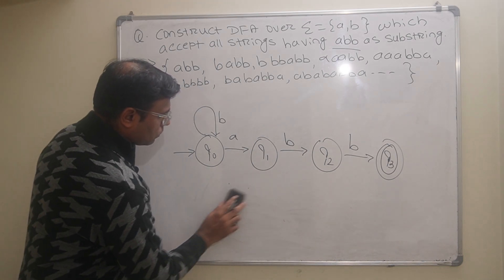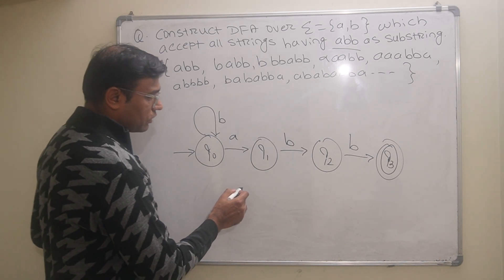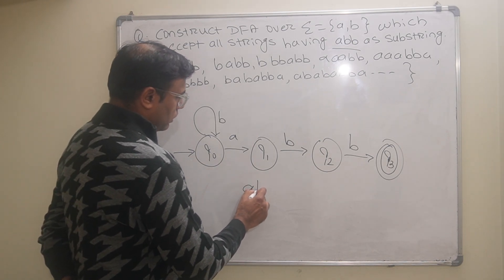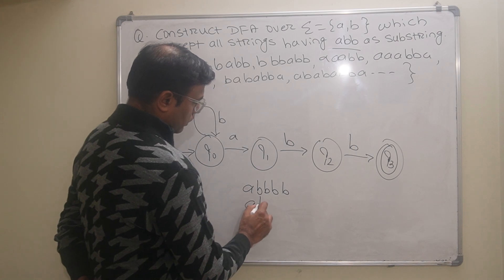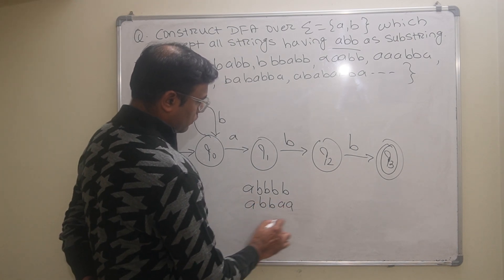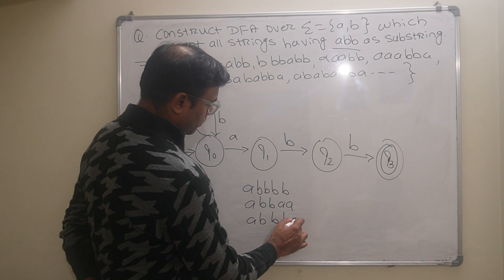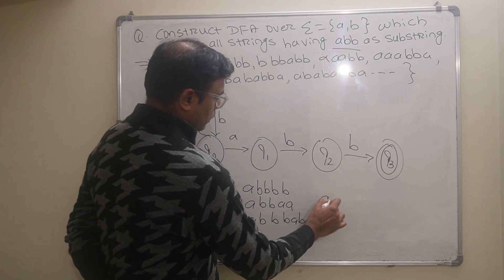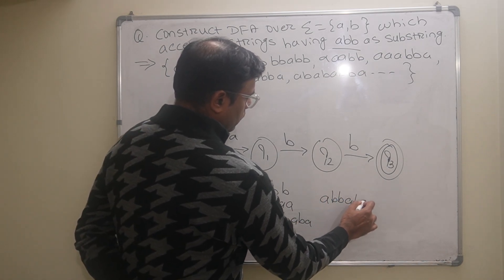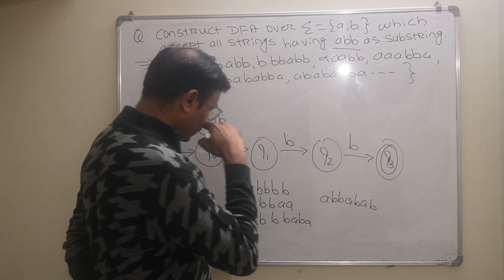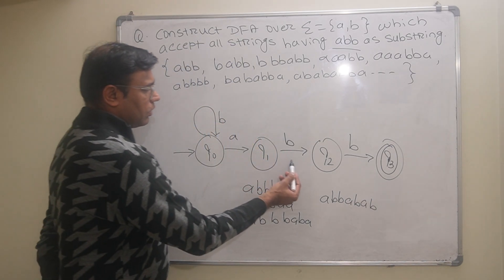Now consider strings like ABBBB, ABBBA, ABBBBA — the string can end with A or B after ABB. For example: ABBBB, ABBBA, ABBBAB. Once the DFA reaches the final state Q3, it must handle additional input symbols. We start by tracing the string ABB to reach Q3.